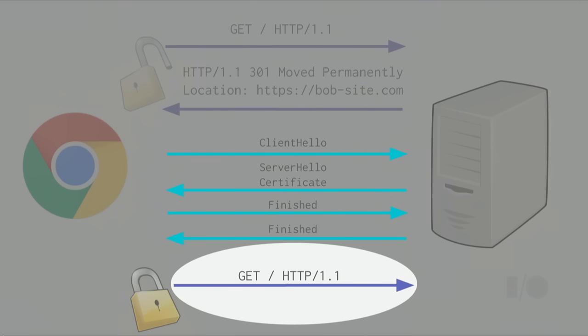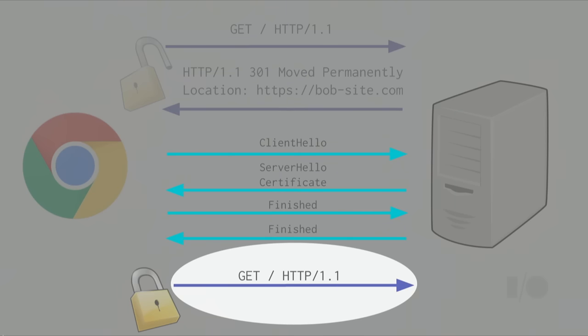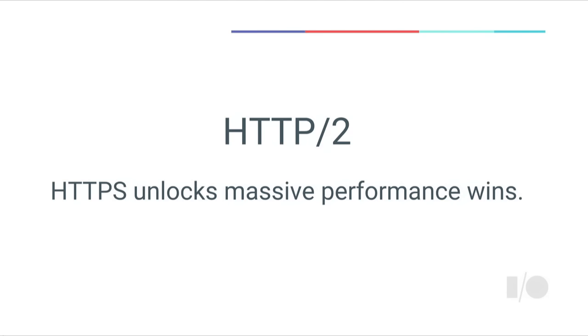All right, we're finally ready to send the HTTPS request — and this is where things get cool. Using HTTPS unlocks some pretty dramatic performance improvements, primarily in the form of HTTP/2, the next version of HTTP, which is now supported in many browsers including Chrome and Firefox. I'm going to describe some of the performance wins you get from HTTP/2, and then talk about its connection to HTTPS and why the two are linked together.